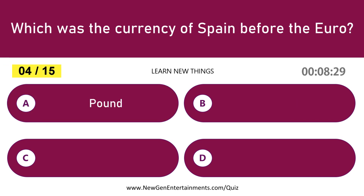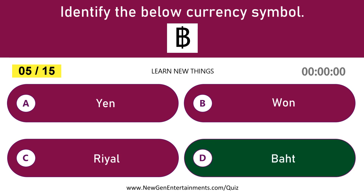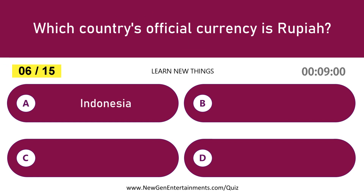Which was the currency of Spain before the Euro? Peseta. Identify the below currency symbol. Baht. Which country's official currency is Rupiah? Indonesia.